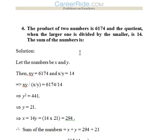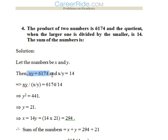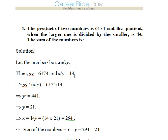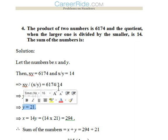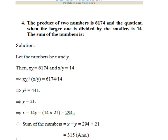Fourth question. The product of two numbers is 6174 and the quotient when the larger is divided by the smaller is 14. Find the numbers. Let the numbers be x and y: x times y equals 6174, and x divided by y equals 14. Dividing xy by x/y gives y squared equals 6174 divided by 14, which is 441, so y equals 21. Placing y equals 21 into x/y equals 14 gives x equals 294. The sum of the numbers is 294 plus 21, which equals 315.